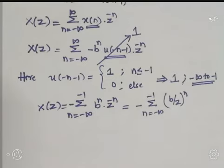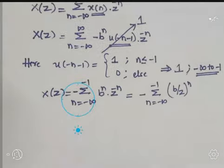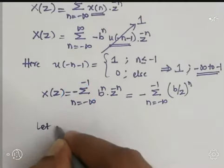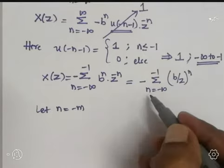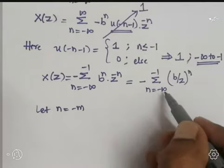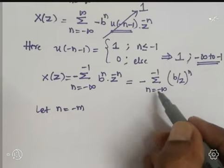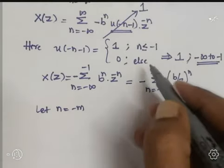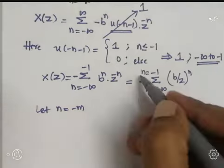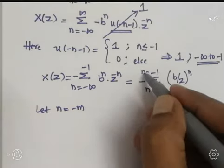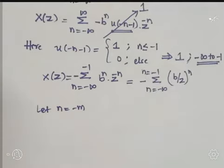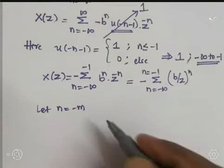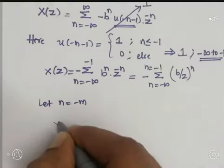Because of that, I am going to re-index by substituting n = -M. When n = -∞, M = ∞. When n = -1, -M = -1, so M = 1. The upper limit becomes M = 1.